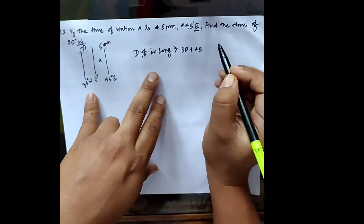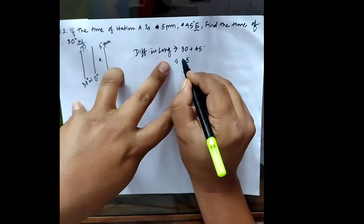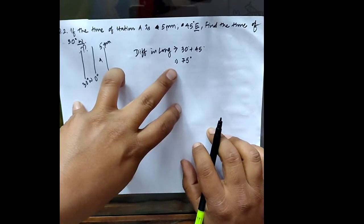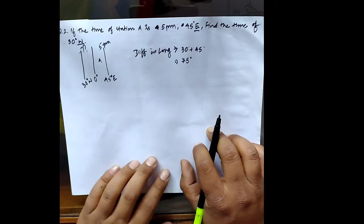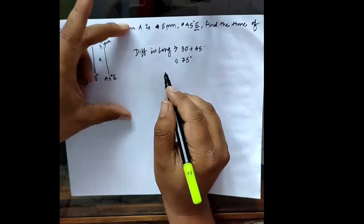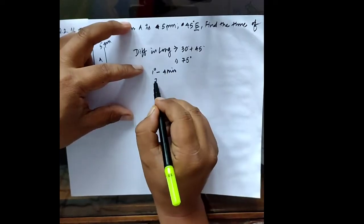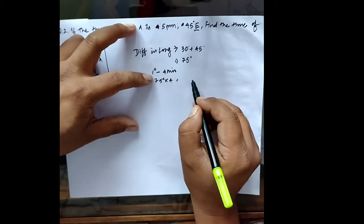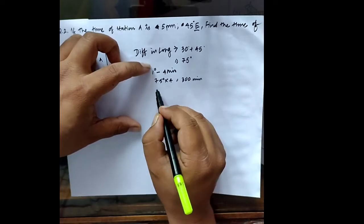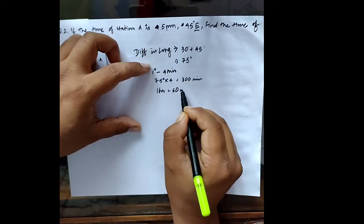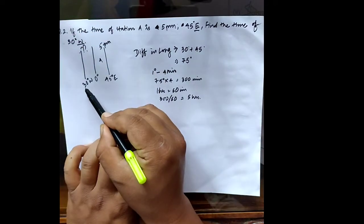So 30 degrees plus 45 degrees equals 75 degrees of longitudinal difference. Since one degree equals four minutes, 75 multiplied by 4 is 300 minutes. Converting 300 minutes to hours by dividing by 60 gives us 5 hours. So there is a 5-hour time difference between 30 degrees west and 45 degrees east.